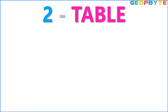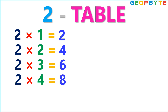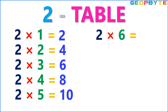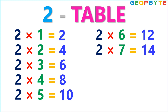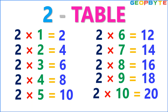Now let us see the 2 table. 2 1s are 2. 2 2s are 4. 2 3s are 6. 2 4s are 8. 2 5s are 10. 2 6s are 12. 2 7s are 14. 2 8s are 16. 2 9s are 18. 2 10s are 20.